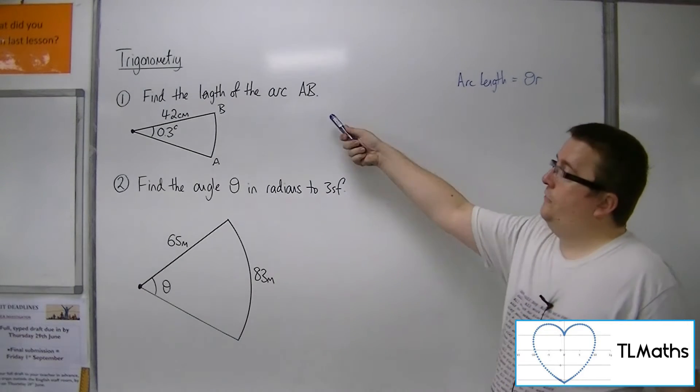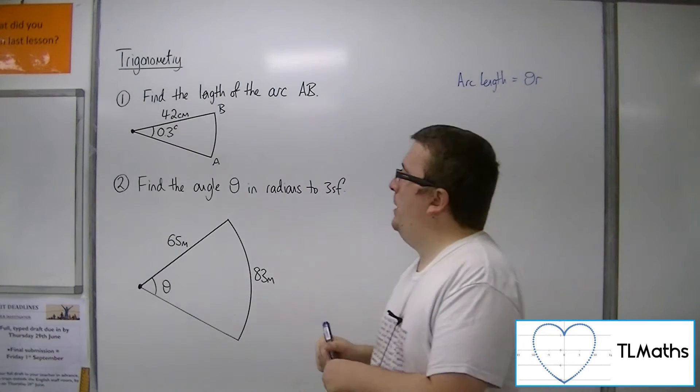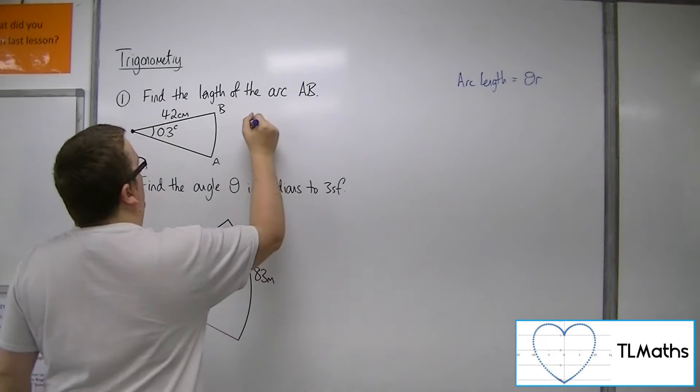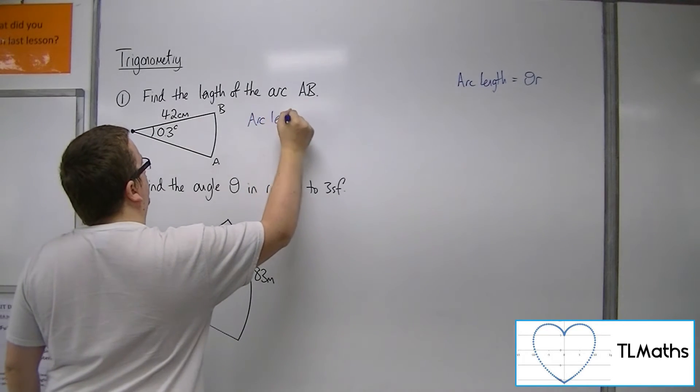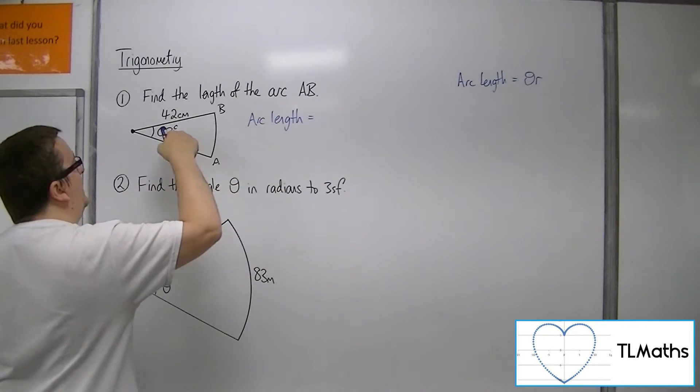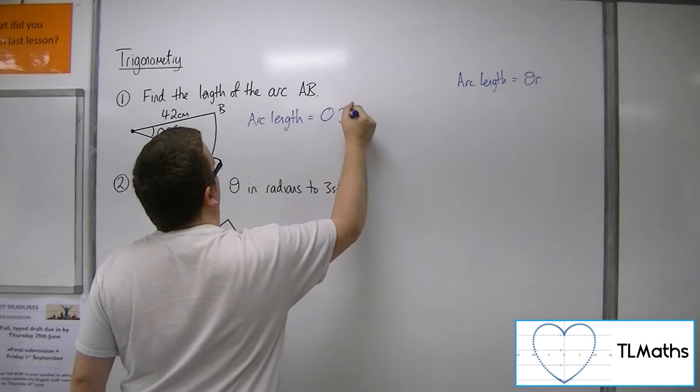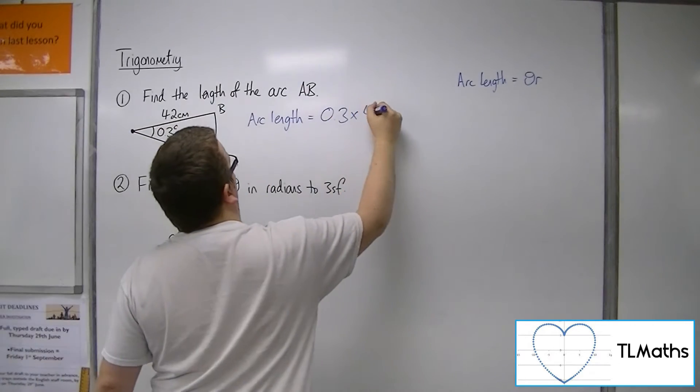So if I need to find the length of the arc AB, then the arc length is equal to theta, 0.3, times r, 42.